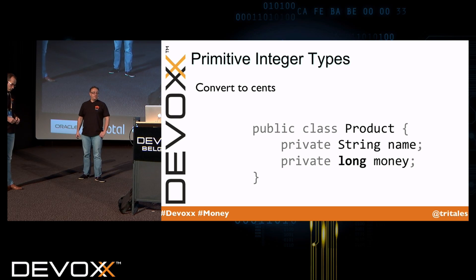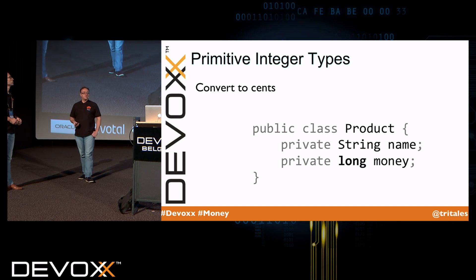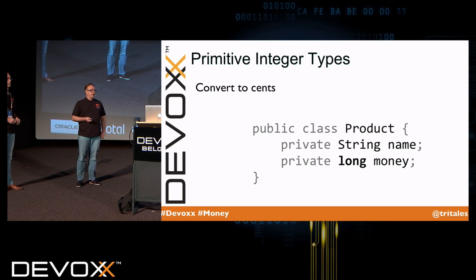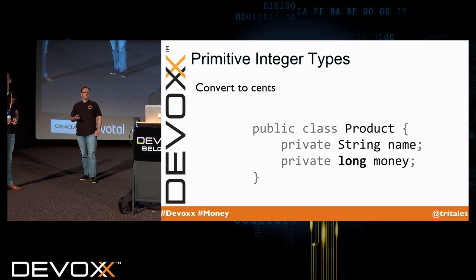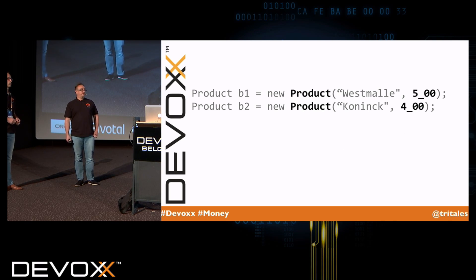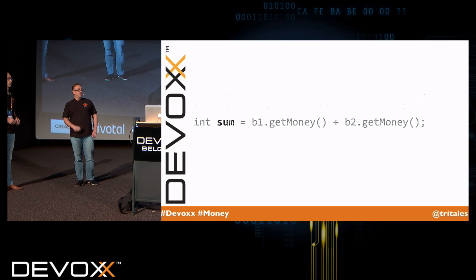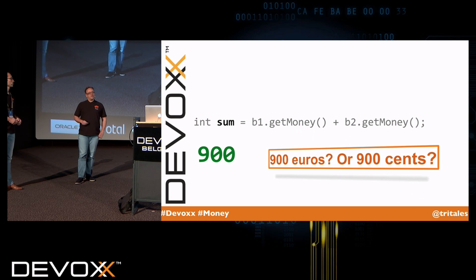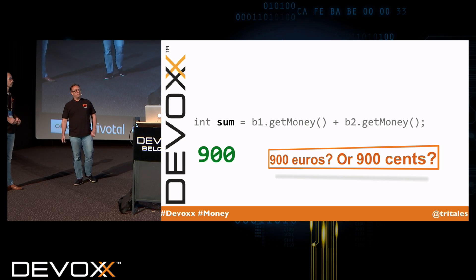So the next attempt would probably be to use integer types, but then you have to remind yourself constantly to convert to cents first. For example, let's take a class called Product — it has an attribute name and an attribute money of type long. Now suppose in our system we have two products defined, and somewhere else our colleague is going to sum up the values. He could be a bit confused about what 900 means. Is it 900 euros or 900 cents?